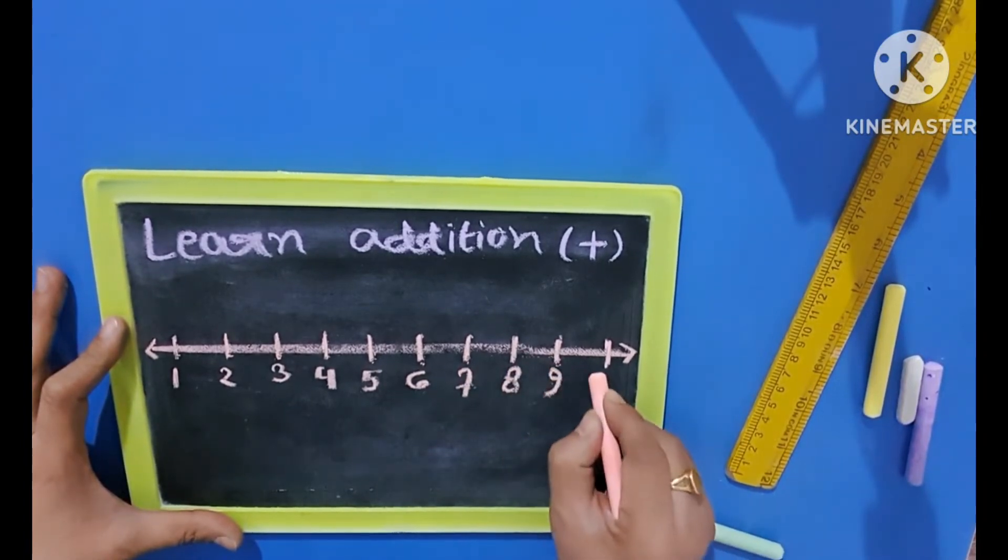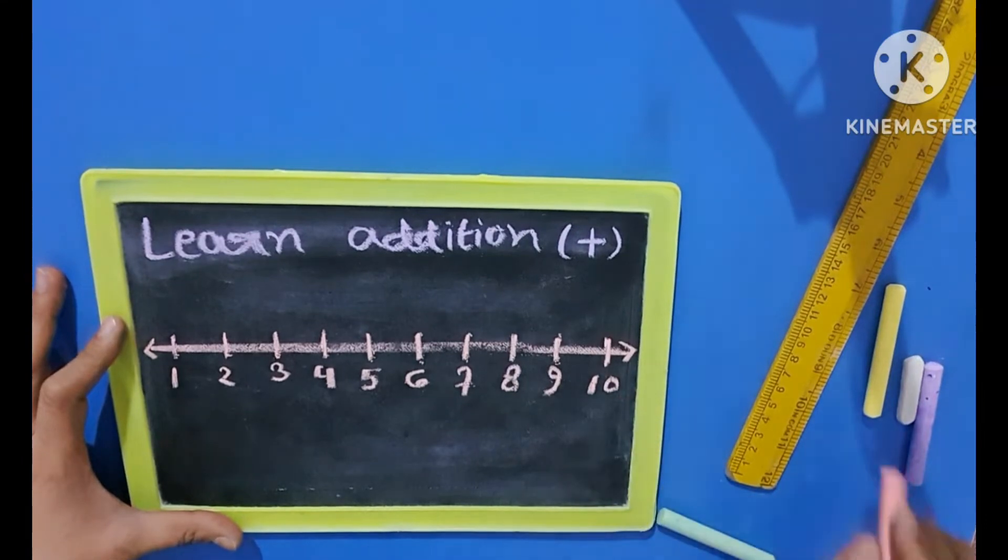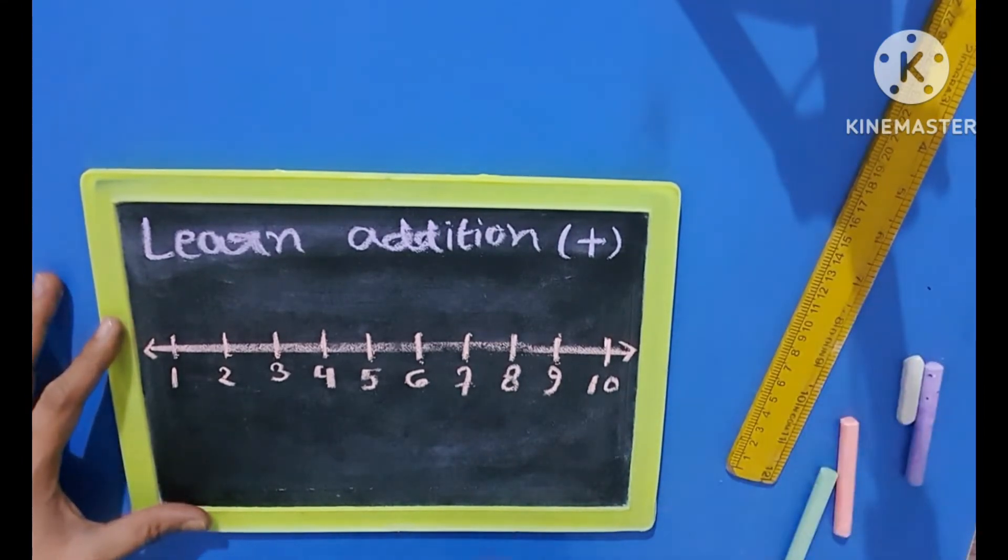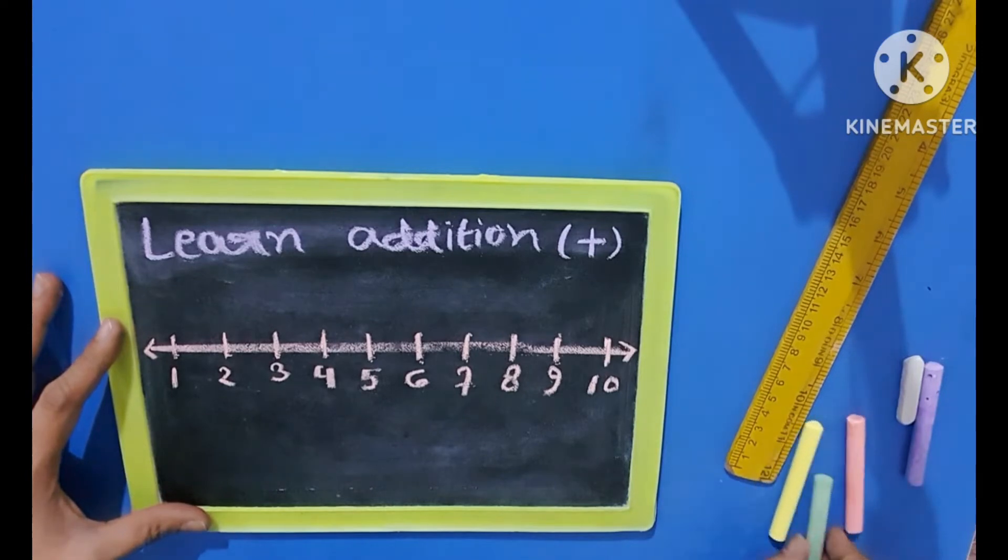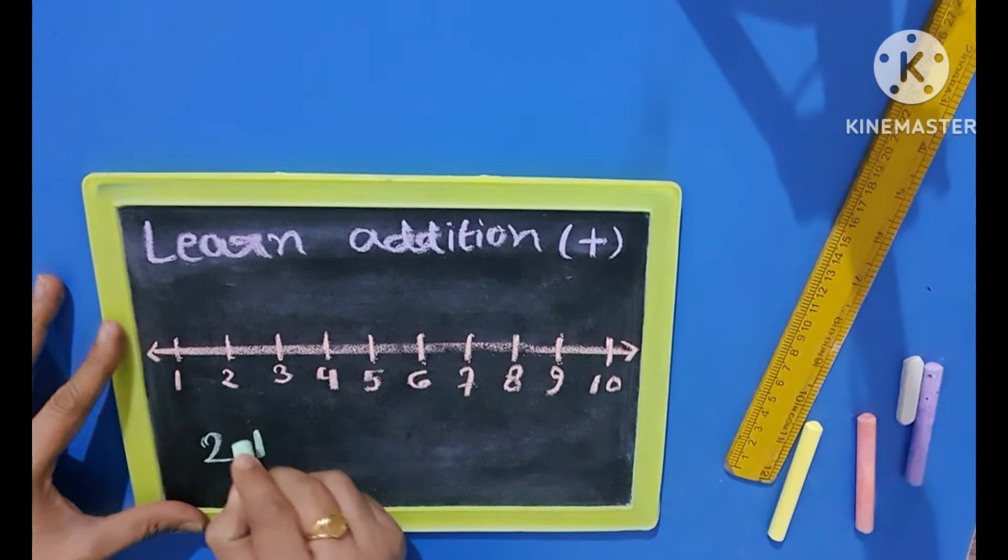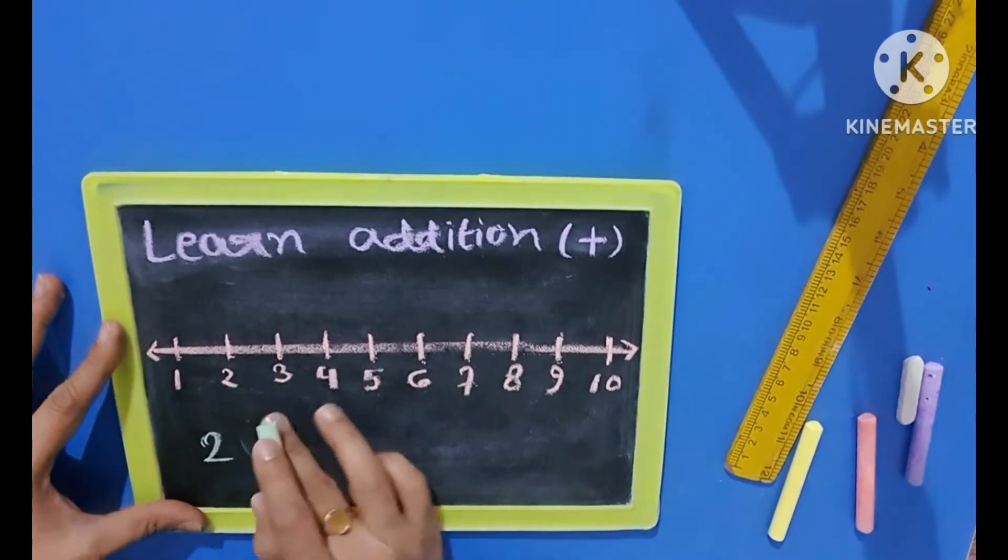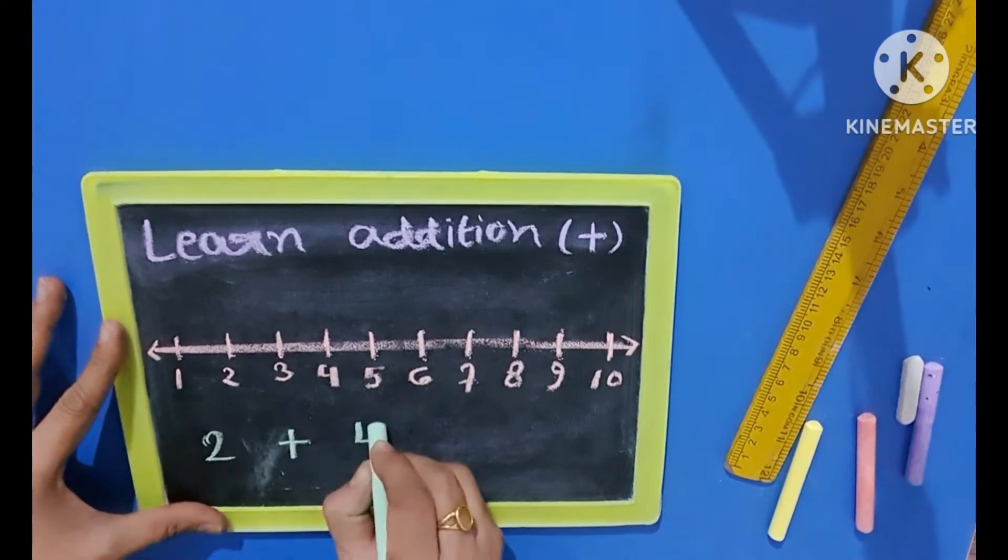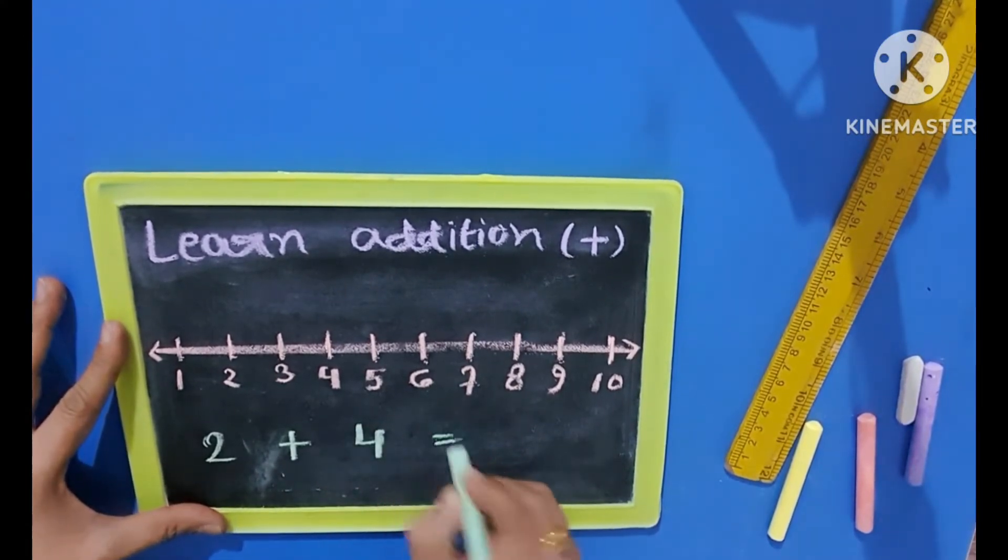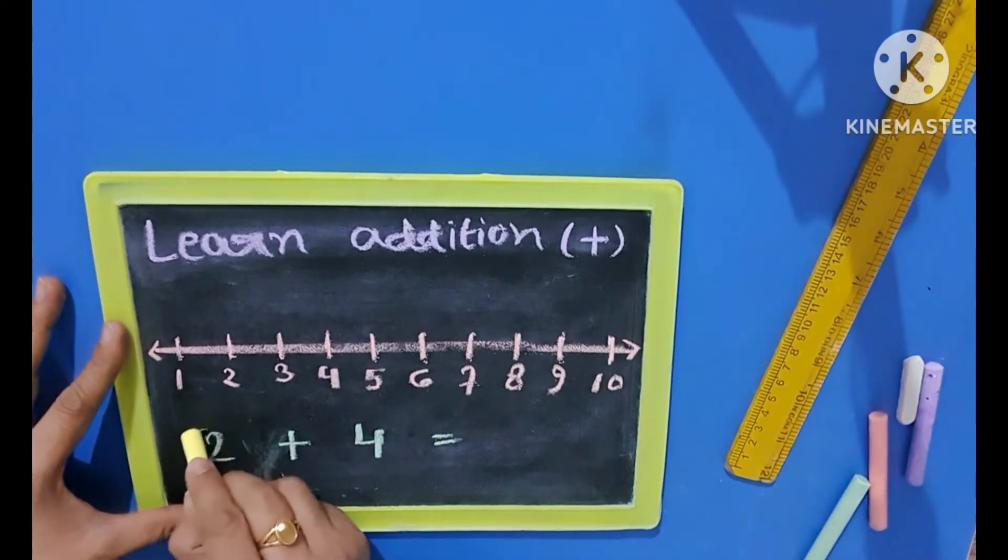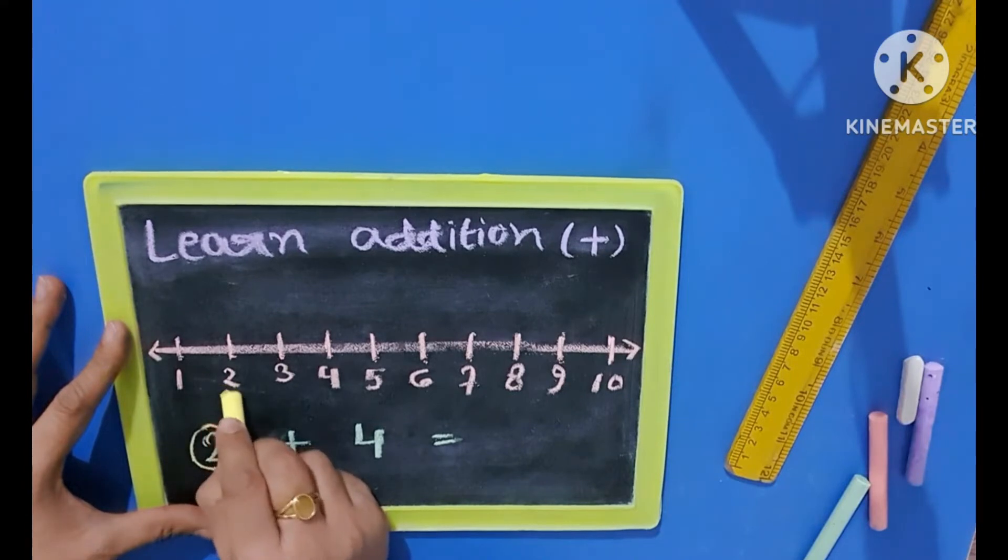Here you can use this method in your notebook, rough paper, or slate. Slate is very convenient. Now we will do the addition of 2 plus 4. See, this 2 comes first so we will identify the number 2.